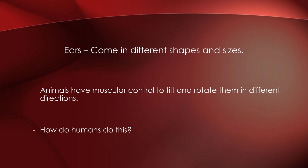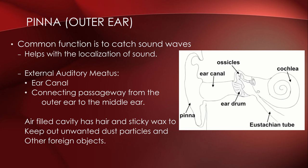Animals have muscular control to tilt and rotate their ears in different directions — if you notice a dog, their ears pop up. Humans can't rotate their ears to locate where sound is coming from; we actually have to turn our heads. The outer ear — the pinna — functions to catch sound waves, help localize sound, and funnel it down through the ear canal. From the pinna comes the external auditory meatus, which is the ear canal, a connecting passageway from the outer ear to the middle ear.